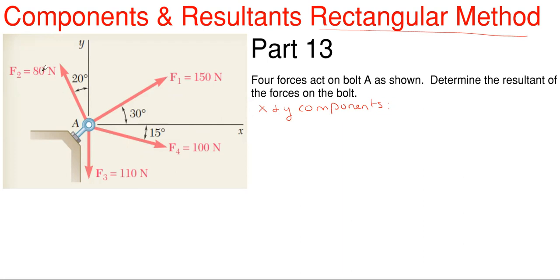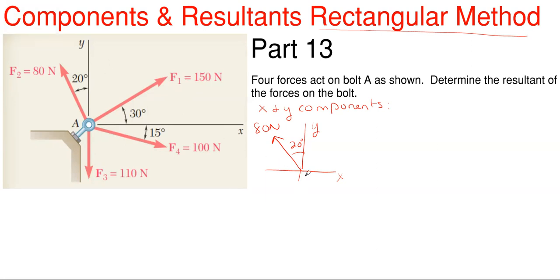Starting with the first force — they've labeled it F2 — of 80 newtons, which is 20 degrees off of the y-axis. Because this arrow points up and to the left, the components must also be up and to the left. The x will be to the left and the y will be upward. We multiply 80 newtons by sine of 20° for x (since the angle is off the y, x is opposite the angle) and cosine of 20° for y.